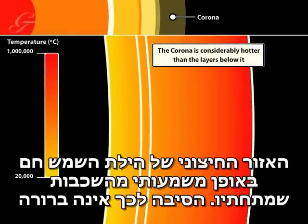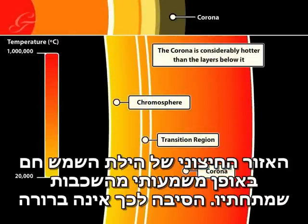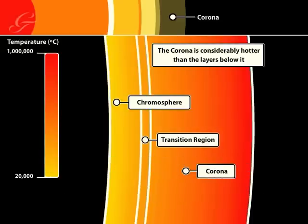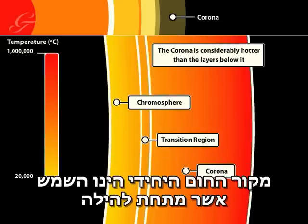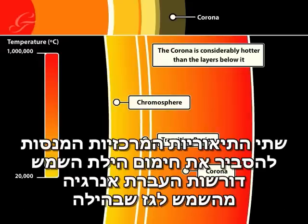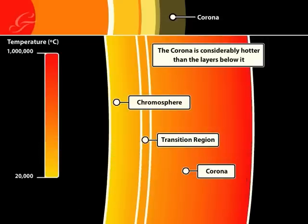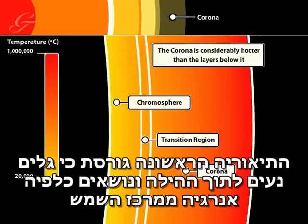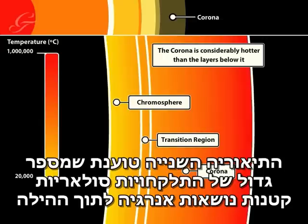The outer part of the corona is considerably hotter than the layers beneath it, which is a puzzle. The only heat source is the Sun below the corona, so it would be expected that the outer layers would be colder than the inner layers. The two main theories to explain coronal heating both require energy to be transferred from the Sun to the coronal gas. The first theory is that waves, a little like sound waves, travel through the corona carrying energy into it from lower down. The second theory is that large numbers of small solar flares carry energy into the corona.